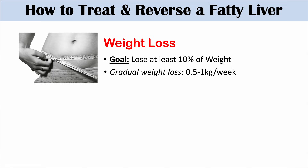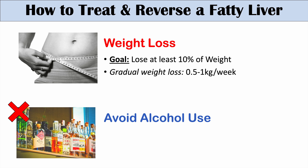Another important step when you have fatty liver disease is to avoid alcohol use. Every time alcohol is consumed, it can lead to some inflammation and damage to your liver. You already have fats there that can cause inflammation, so you want to avoid as much damage to your liver as possible. Abstaining completely would be best. To summarize: lose at least 7 to 10% of your weight gradually, and avoid or abstain from alcohol.